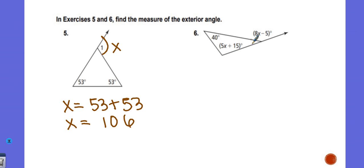Here it says find the measure of the exterior angle, that's this angle here. So I should be able to say 8X minus 5 should equal 40 plus 5X plus 15. I should be able to add these two together to get that one on the outside.